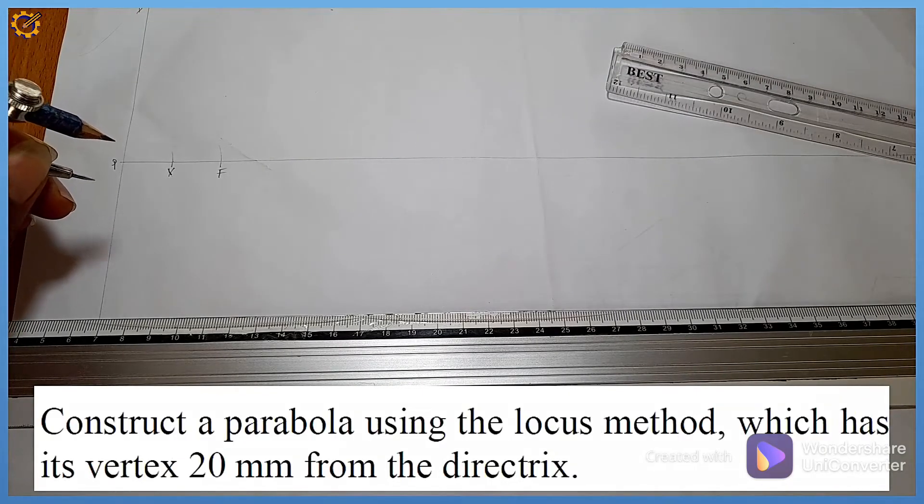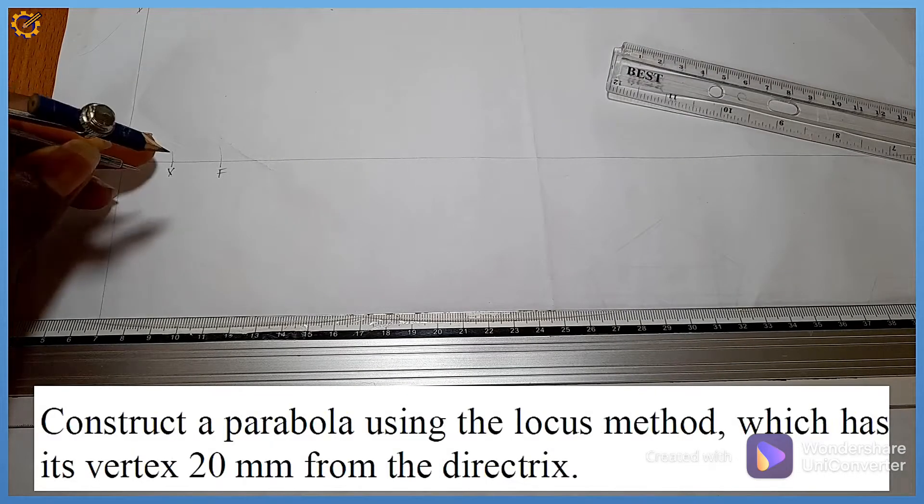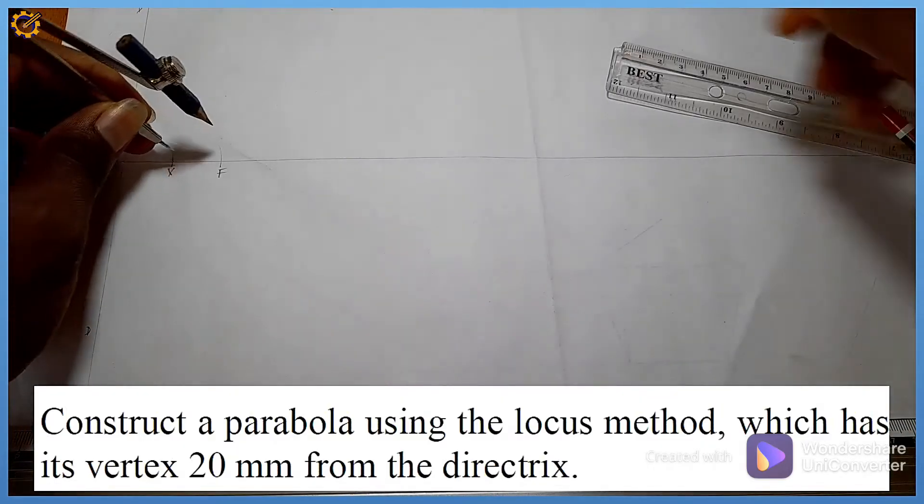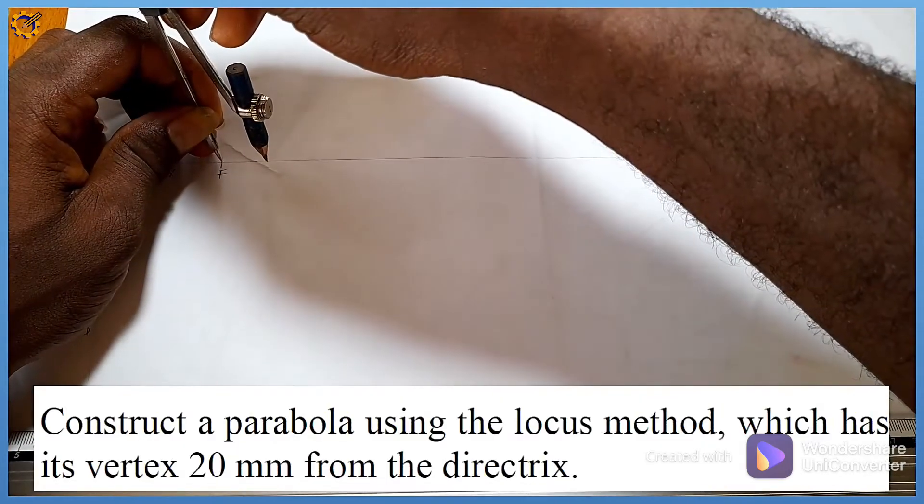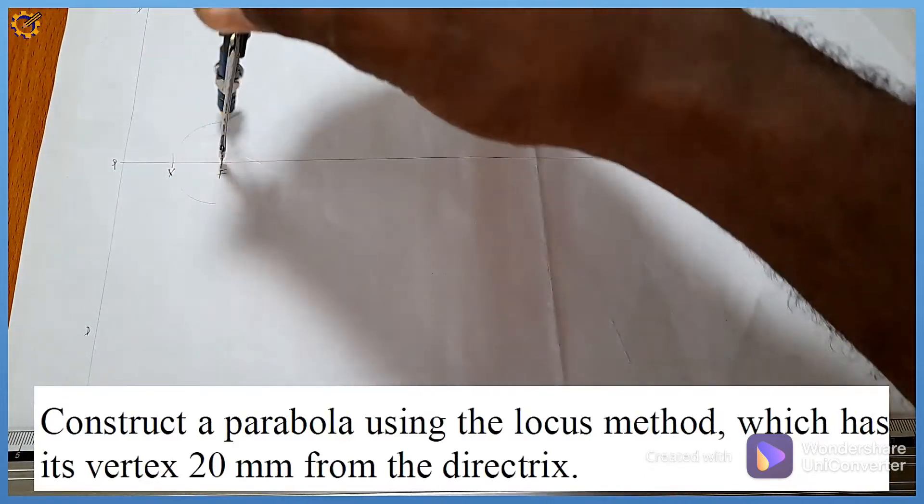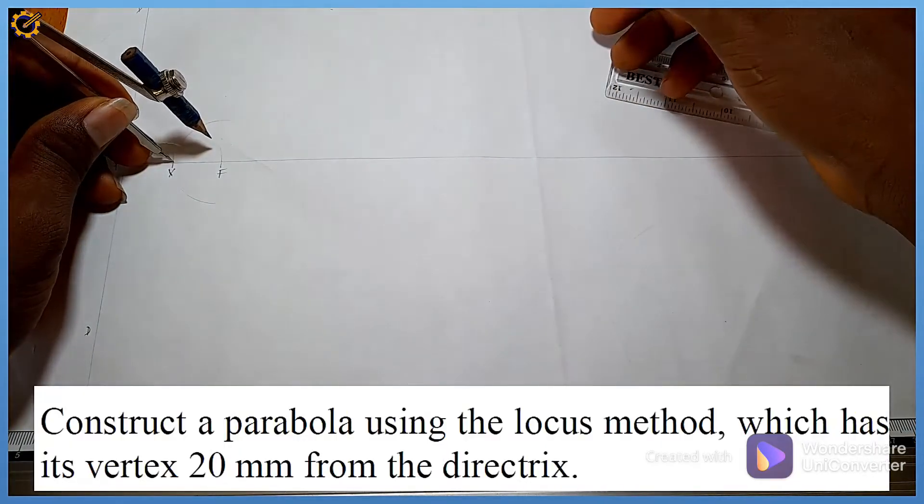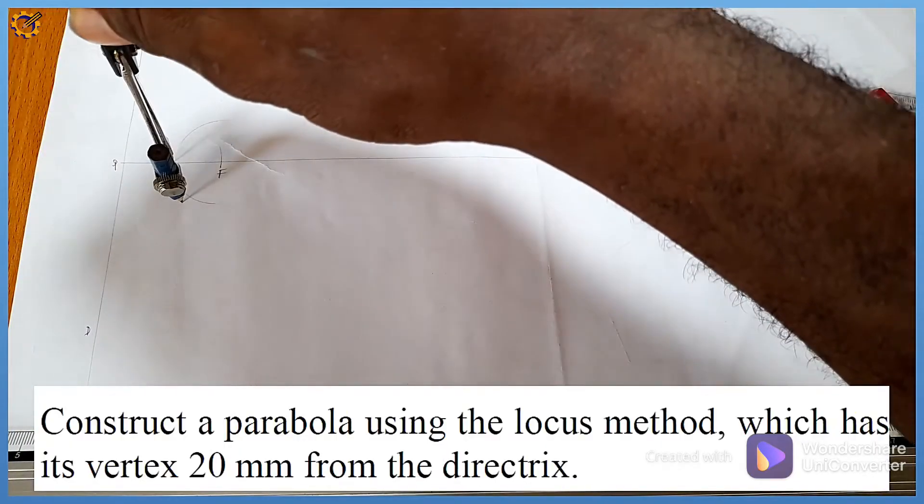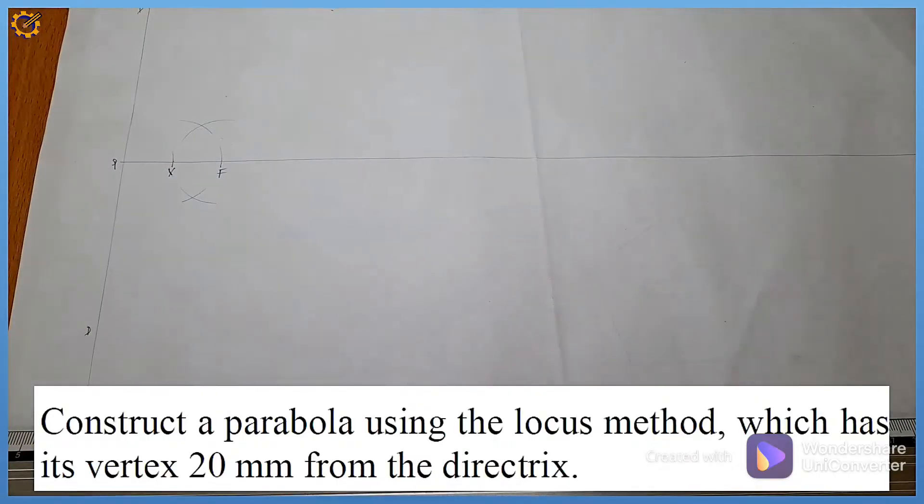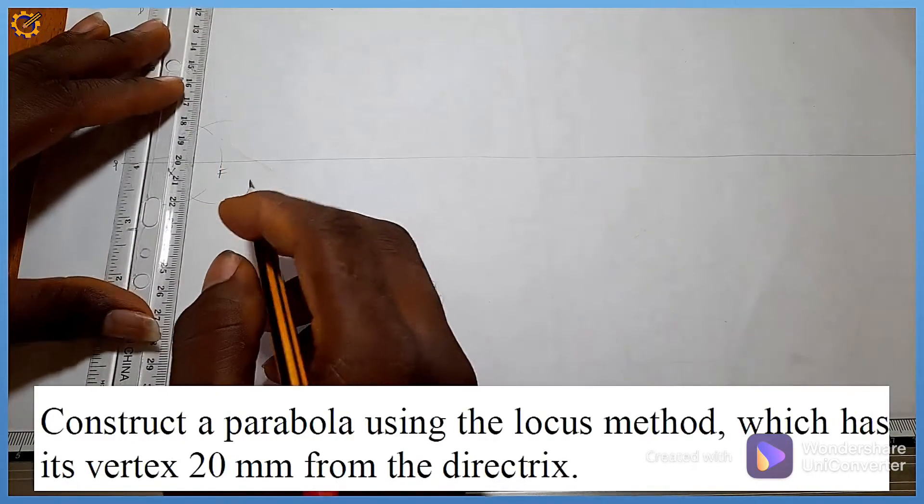Now, applying the locus method, the next procedure is for me to divide VF into two equal parts. I'm going to use the bisection principle. From point F I strike my arc here and at the top, with the same radius on point V I strike bottom and top. With that I have two points.